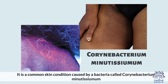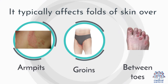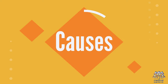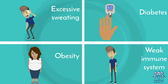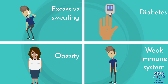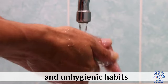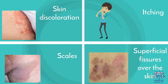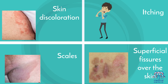3. Erythrasma. It is a common skin condition caused by bacteria called Corynebacterium minutissimum. It typically affects folds of skin over armpits, groins, and between toes. Causes: excessive sweating, diabetes, obesity, weak immune system, and unhygienic habits. Symptoms: skin discoloration, itching, scales, and superficial fissures over the skin.